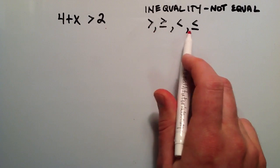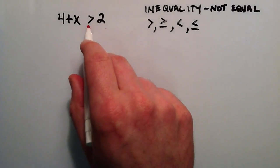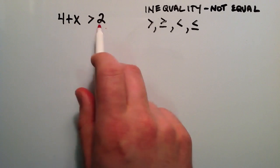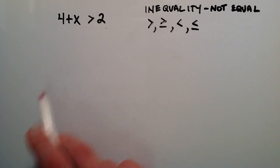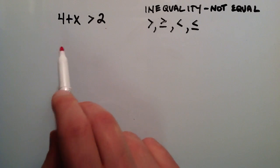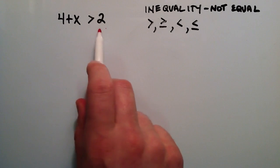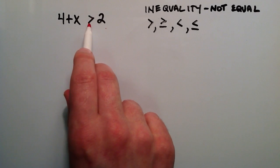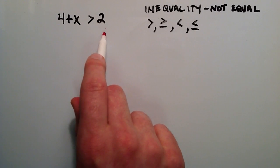Anything involving these is going to be an inequality, and basically the way we're going to solve this is we're going to pretend like this is an equal sign. We're going to solve it just like we normally would a normal single variable equation. The only difference is if we were to divide or multiply by a negative number, we would need to flip the direction of the sign. I'll show you that in the second example, but let's go ahead and work on this first example.